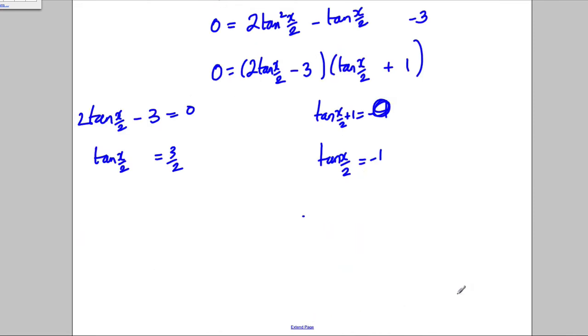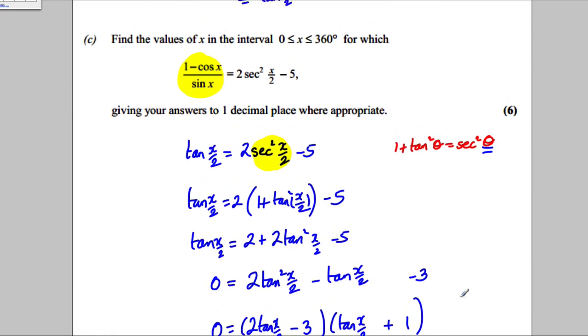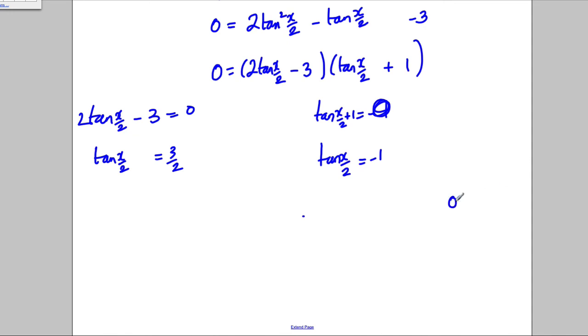Okay, so that's where I'm going to get all my answers from. I'm looking in between 0 to 360. Because we've halved the angle, I'm going to now look between 0 and 180. So X over 2 is therefore the inverse tan of 3 over 2. And X over 2 here would be the inverse tan of negative 1.